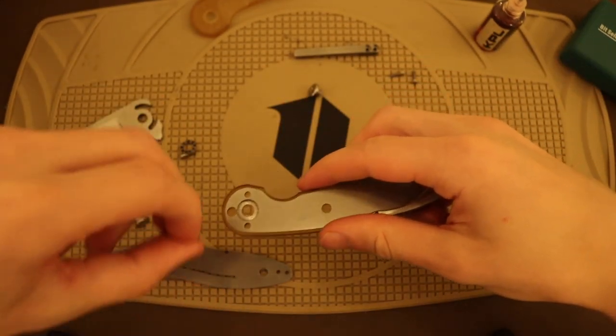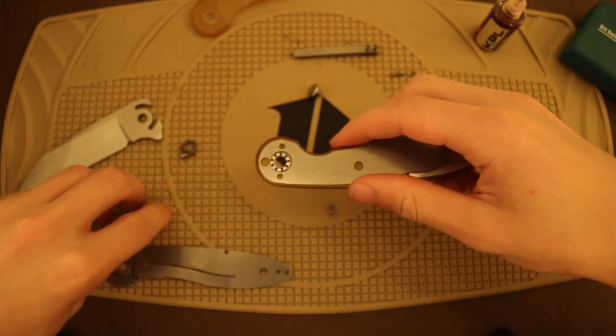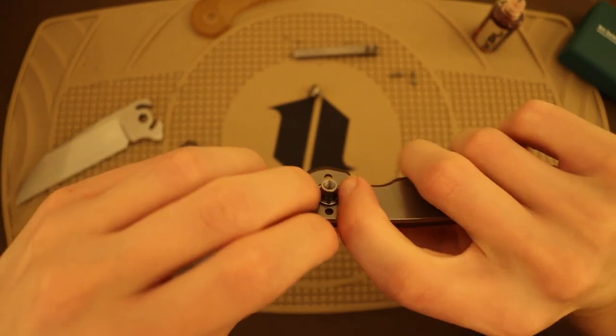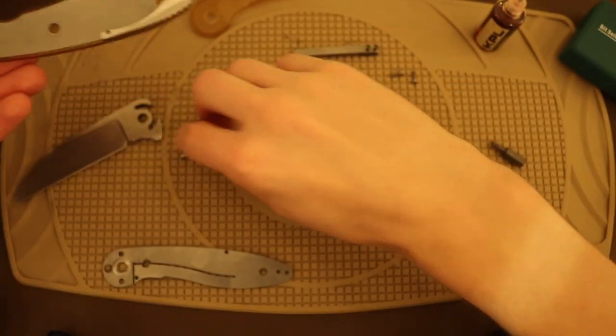Alright, so picking up where we left off, I just used these screws to screw in the backspacer. I think it's easier to do that at this point than it is to try to do it later on down the road. So we will throw this guy together. I'm actually going to drop that out.